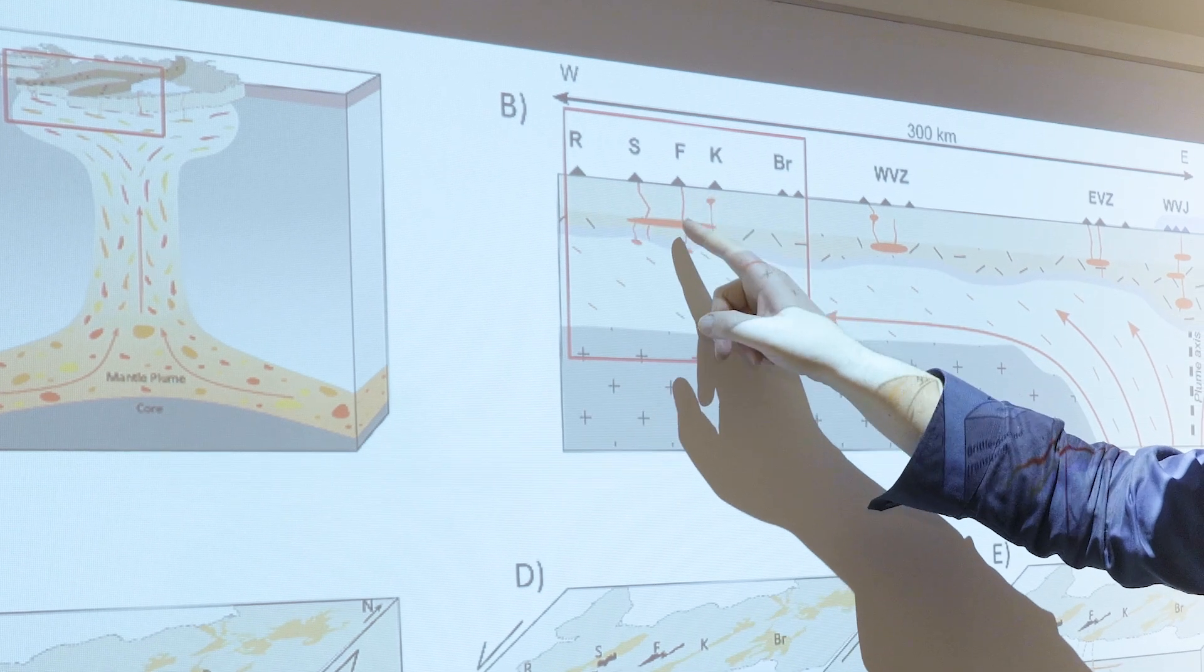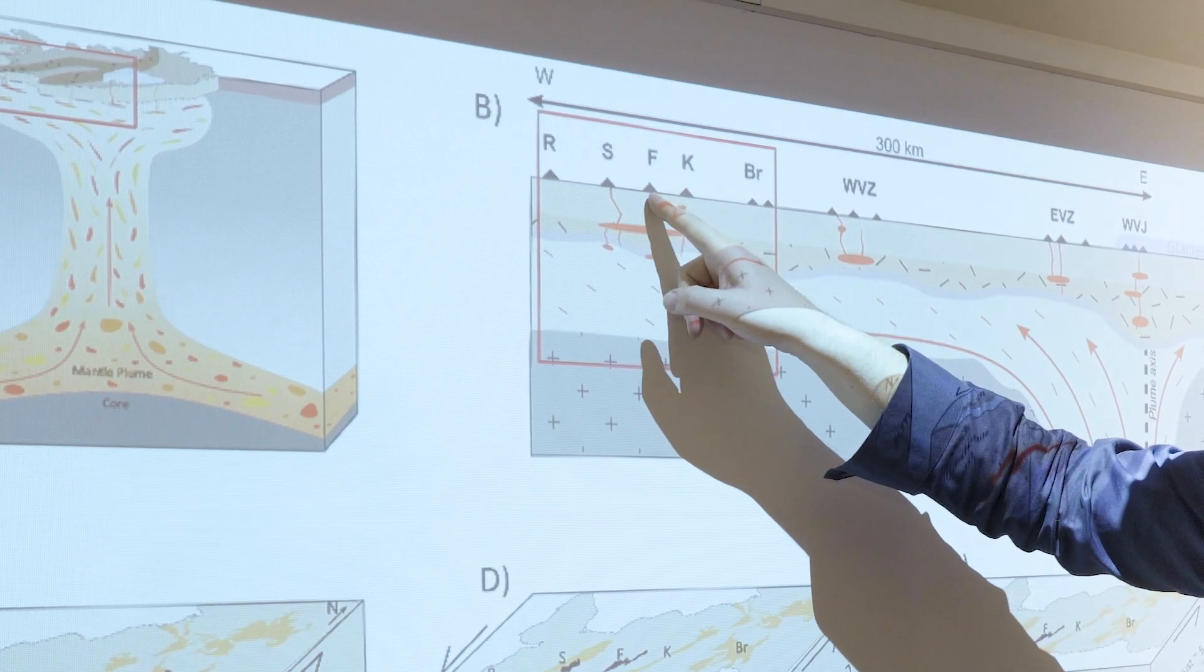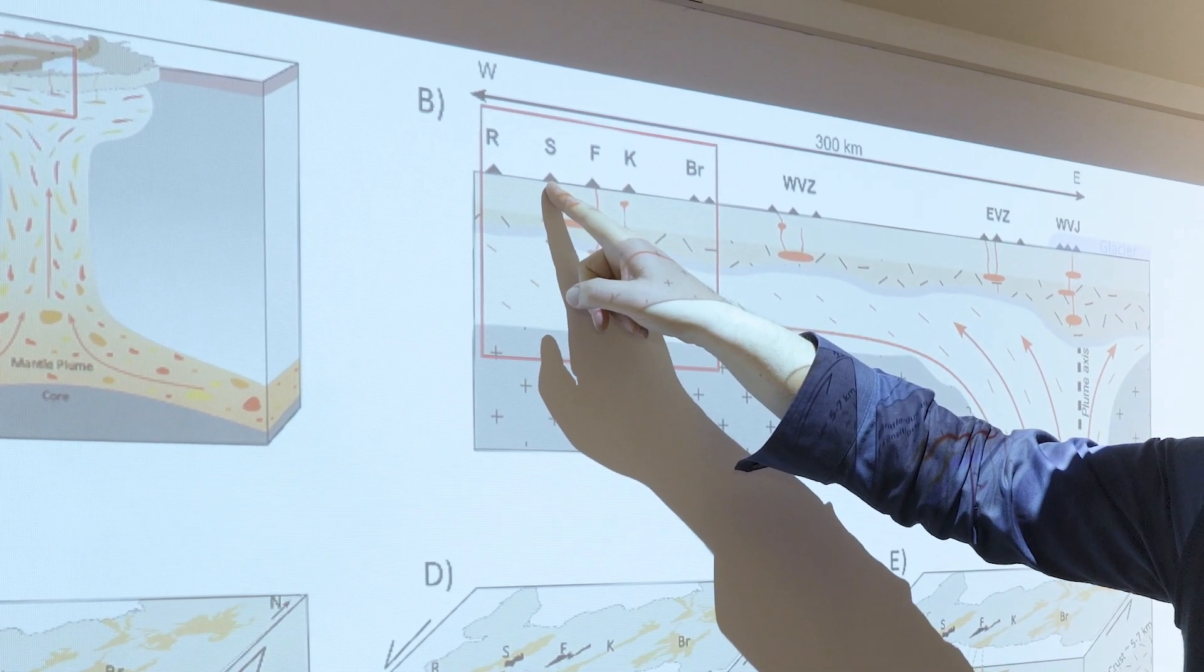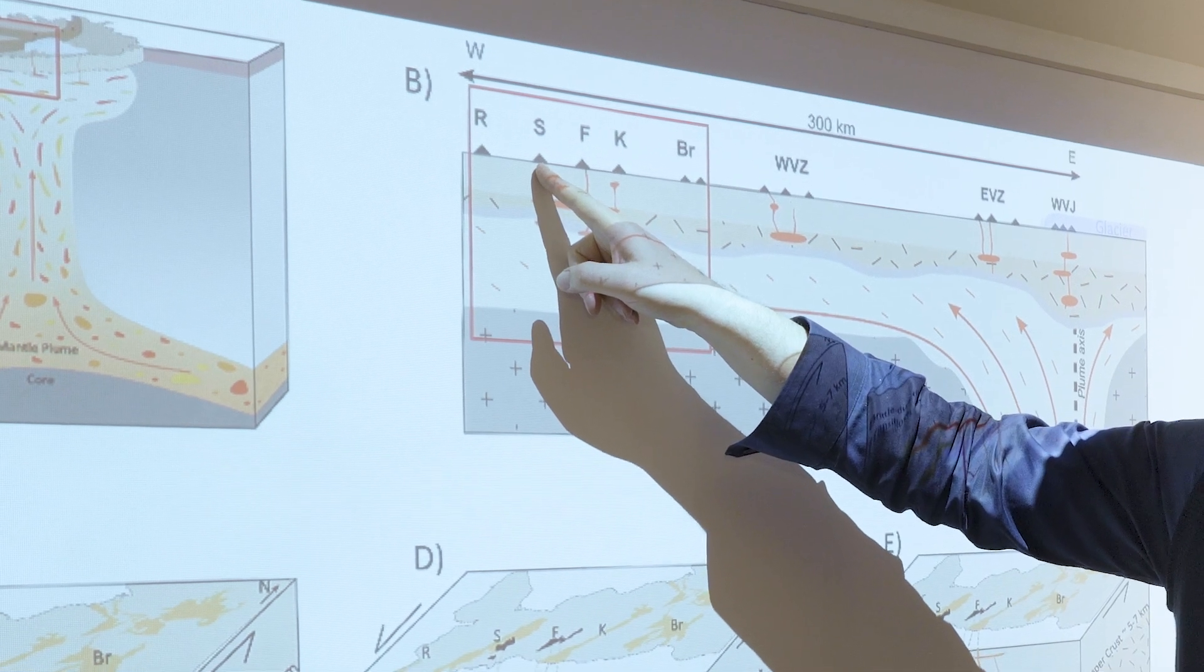We have five volcanic systems there. And we have the Fagradalsfjall and the Svartsengi system. That's the two systems that erupted since 2021.